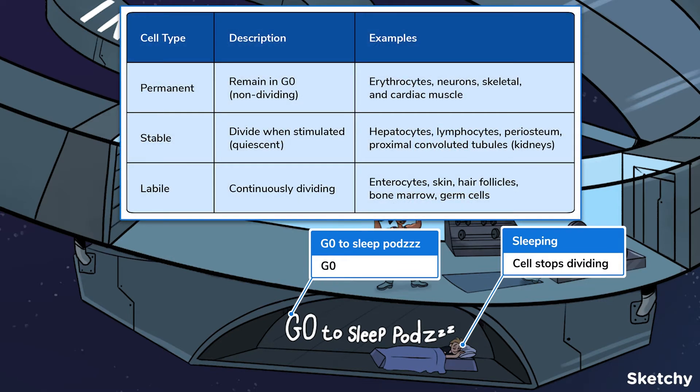Okay, so there are some cells that can stay dormant. For example, permanent cells like erythrocytes, neurons, skeletal and cardiac muscle are completely differentiated and therefore remain in G0. Then there are the stable cells such as hepatocytes, lymphocytes, the periosteum, and proximal convoluted tubule cells found in the kidneys. They can enter and exit G0. In contrast, labile cells such as enterocytes, skin, hair follicles, and germ cells never go into G0 because they have high turnover rates.